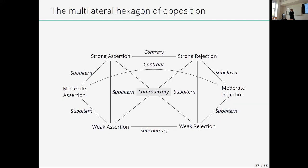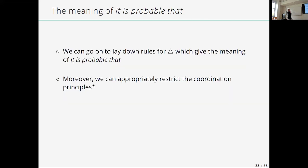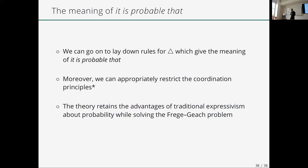We now have a multilateral hexagon of opposition. Very quickly, we can lay down rules for the triangle operator, whose intended reading is 'it is probable that', in terms of the speech act of moderate assertion. So we are explaining 'it is probable that' in terms of probability. We can also appropriately restrict the coordination principles — though that turns out to be trickier than initially thought. The theory retains the advantages of traditional expressivism about probability while solving the Frege-Geach problem.